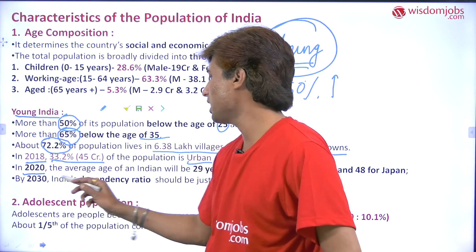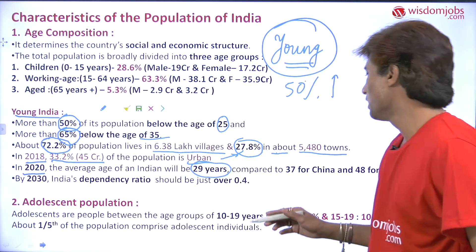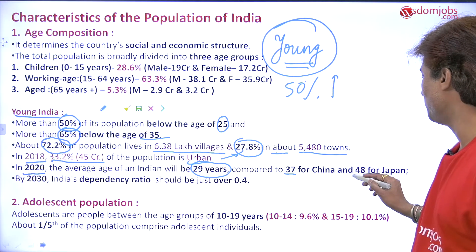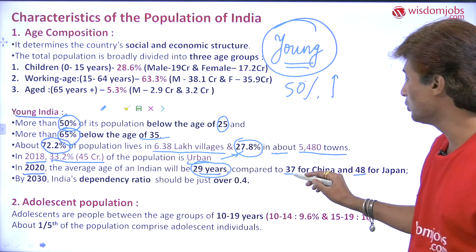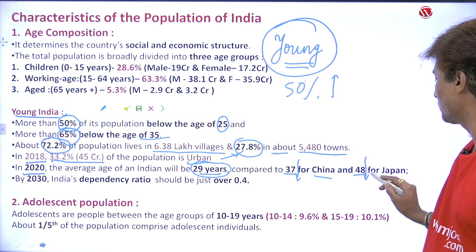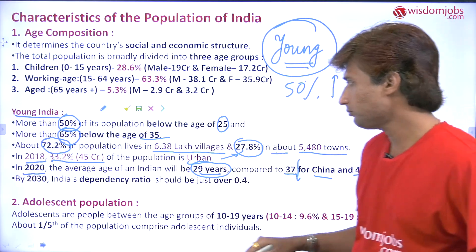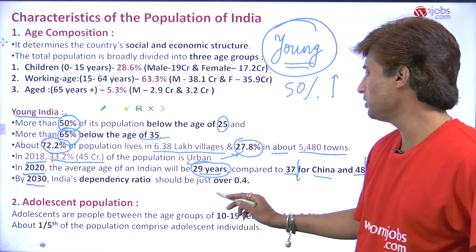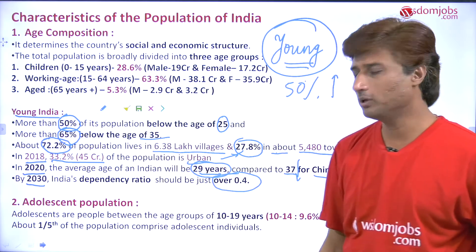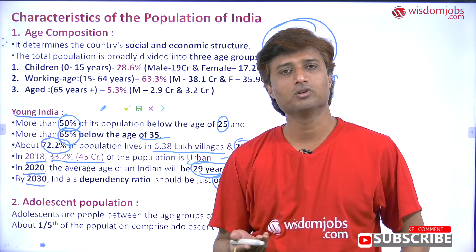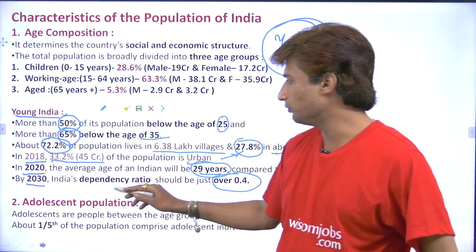By 2020, the average age of Indians is said to be 29 years, compared to China at 37 years and Japan at 48 years. This shows that the average Indian is young compared to China and Japan. By 2030, India's dependency ratio will be around 0.4%, meaning only 0.4% of the population will depend on the rest — which is good news.